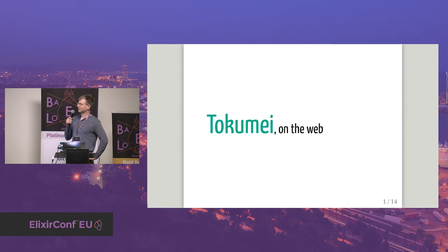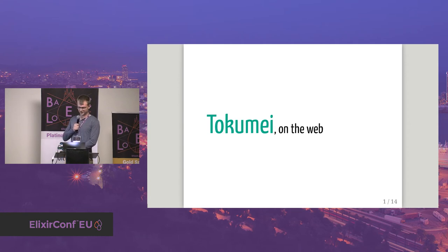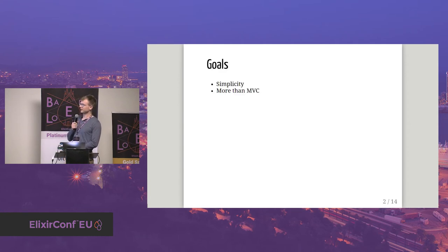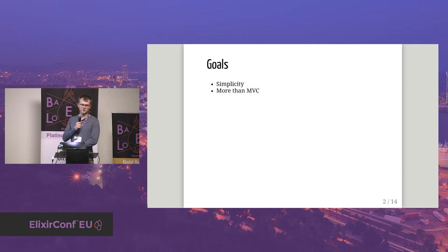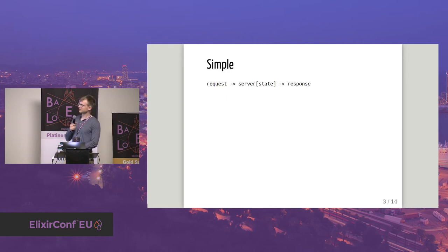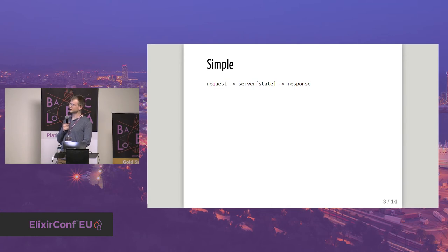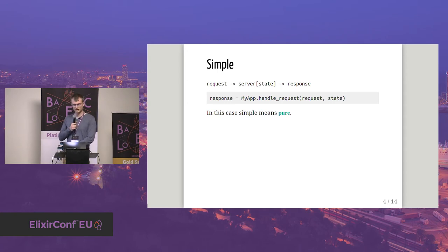Tokame is a web layer for Elixir applications. The goals are simplicity and being more than MVC. In reality, it focuses on the web layer only — it's perhaps like a Sinatra for Elixir. For simplicity, a server gets a request, makes a response. In Tokame you have a request and a state and you get a response. Simple means pure — there are pros and cons to this, and I've written a blog post investigating further.